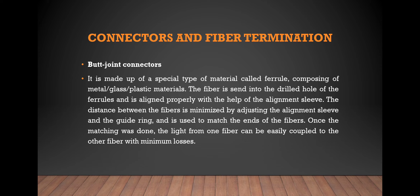For the butt joint connection, it is made up of a special type of material called a ferrule, which is a composition of metal, glass, and plastic. The fiber is seated into a drilled hole in the ferrule and aligned properly with the help of an alignment sleeve. The distance between the fibers is adjusted by the alignment sleeve, and a guide ring is used to match the ends of the fibers.